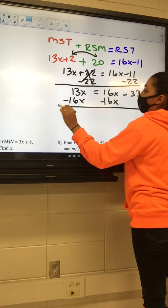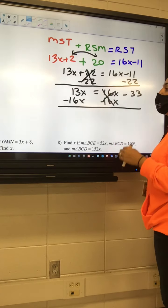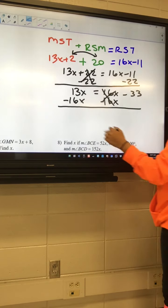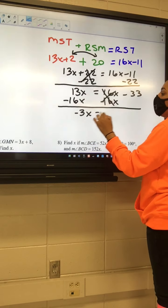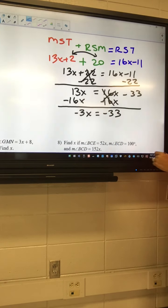So minus 16X minus 16X. And those two 16s cancel each other out. Perfect, so I got a 13 minus a 16. What do you look at? Negative 3. Negative 3.